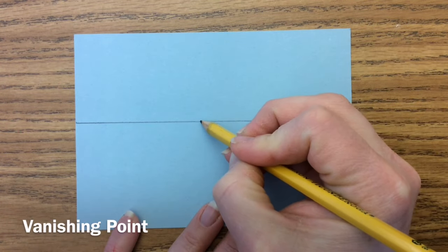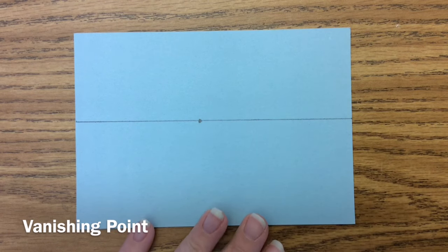A vanishing point is a little dot on the horizon line someplace where all of our lines are going to disappear.